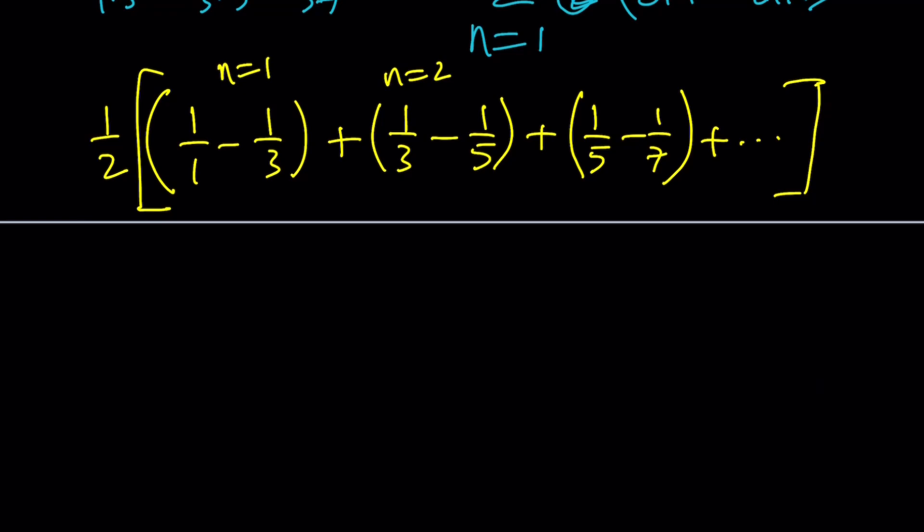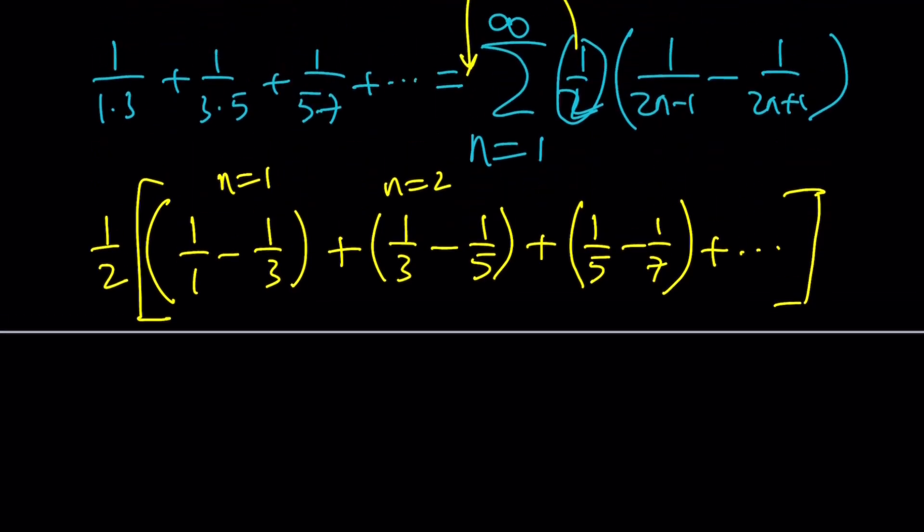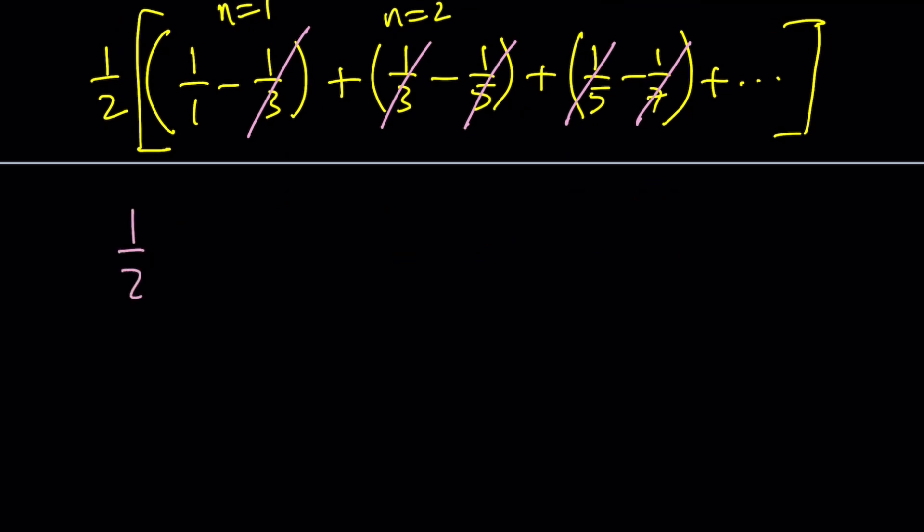What do you do with this sum? Simplify. And it simplifies a great deal. Look at this. Negative 1 third and positive 1 third. Opposites, opposites, opposites, all the way up to infinity, right? Everything cancels out except for 1 over 1, which is 1. And these are all going to be zeros. So, 1 half times 1 is 1 half. So, that's our sum, right?